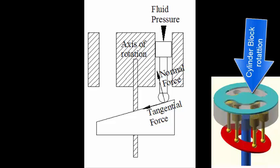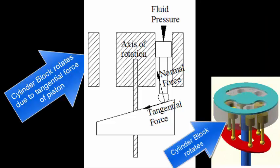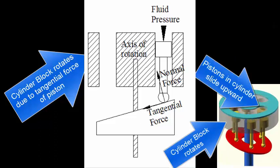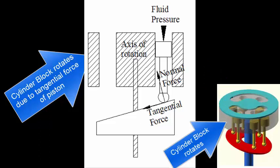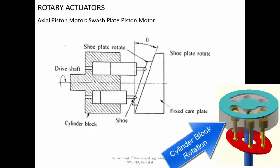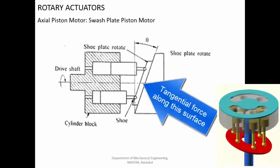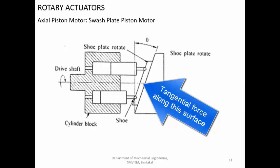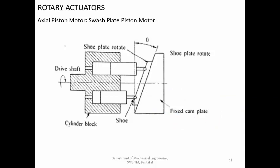Since there are multiple pistons inside the cylinder block, continuously one cylinder after another is trying to slide down, generating force tangential to the inclined surface. One piston will be sliding downwards while another will be sliding upwards, giving you a continuous rotation. The rotation is caused because the outward force of the piston creates a tangential force to the surface. Since the piston can only have reciprocatory motion, as it tries to slide, the cylinder block has a rotary movement, and in this way torque is generated continuously.